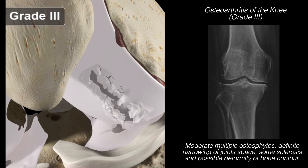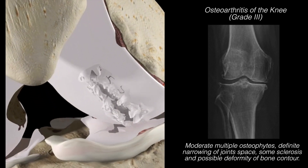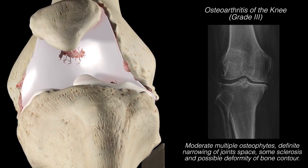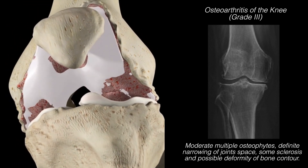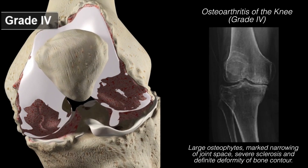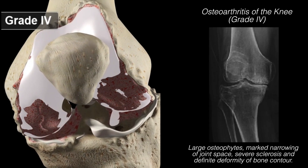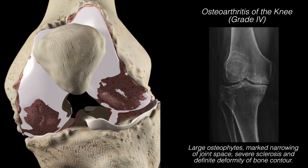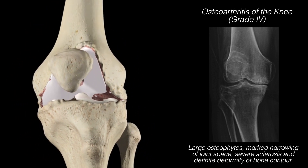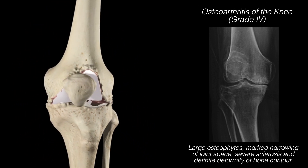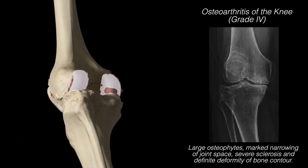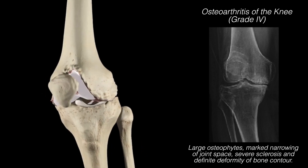Grade 3 has multiple osteophytes or bone spurs with definite joint space narrowing with apparent sclerosis of the bone. Grade 4 is the most severe — it's bone on bone with multiple large osteophytes or bone spurs with marked joint space narrowing and severe sclerosis.